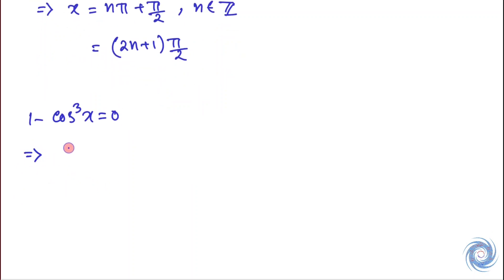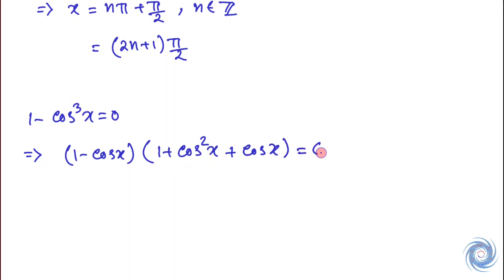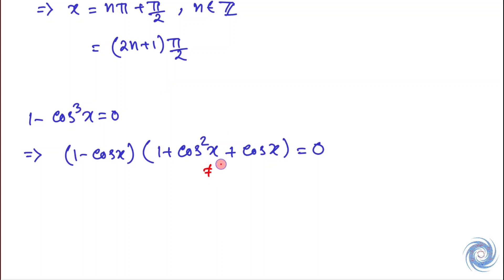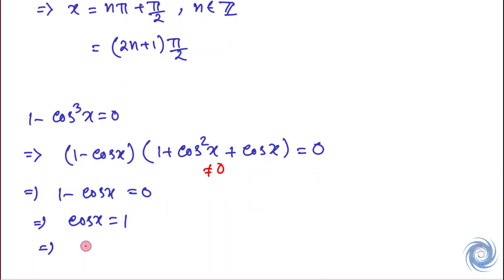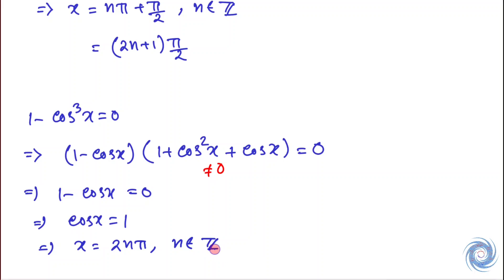Using the argument before, we can show that 1 + cos²x + cos x is non-zero. Therefore, we have cos x equals 1. From here, x = 2nπ where n belongs to ℤ. Note that ℤ is the set of all integers.